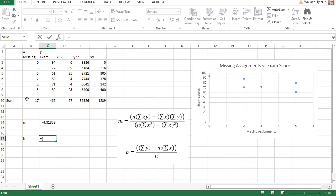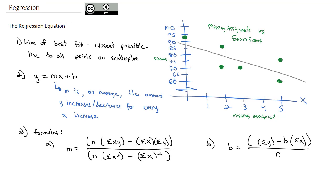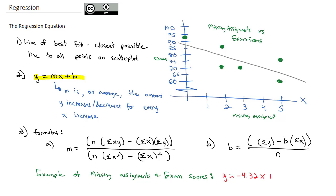For b, we say equals, open parentheses for the numerator — the sum of the y's minus the slope I just calculated, times the sum of the x's — close the parentheses, and divide by the sample size of six. We end up with a y-intercept of 89.9. So using those formulas with our example of missing assignments and test scores, we found our equation in y equals mx plus b form: y equals negative 4.32 times x plus 89.90.